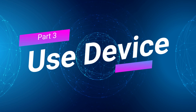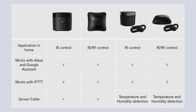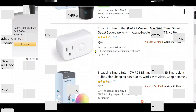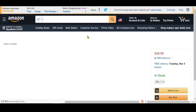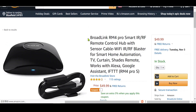Part 3: Use device. Now we can start to use the device. RM4 Mini and RM4 Pro are totally new generation products from Broadlink in 2020. RM4 Mini is an IR universal remote, while RM4 Pro is an IR and RF universal remote. RM4 Mini with sensor cable and RM4 Pro with sensor cable support external temperature and humidity detection, which will be displayed in the Broadlink app. You can easily set triggers, such as turning on your air conditioner automatically when the temperature rises. These special packs only sell on the Broadlink online store on Amazon.